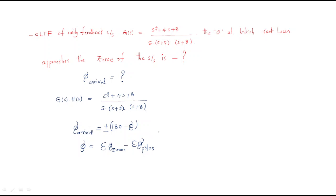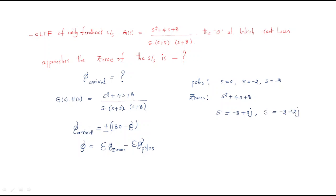First we will find the poles and zeros. The poles are: s = 0, s = -2, and s = -8. For zeros, we solve s² + 4s + 8 = 0, which is a second-order system giving two complex zeros: s = -2 + 2j and s = -2 - 2j.